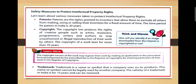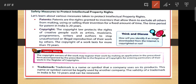Safety measures to protect intellectual property rights. First is patent. Patents are rights granted to inventors that allow them to exclude all others from making, using, or selling their invention for a fixed amount of time. The period of a patent in India is 20 years.